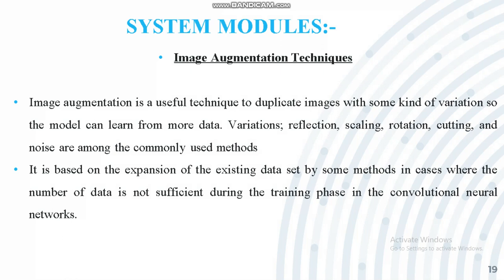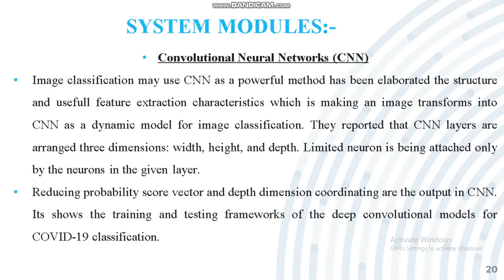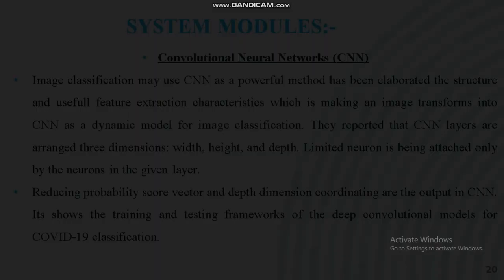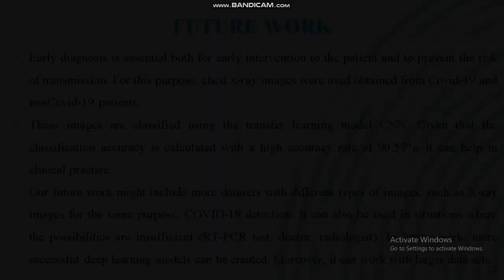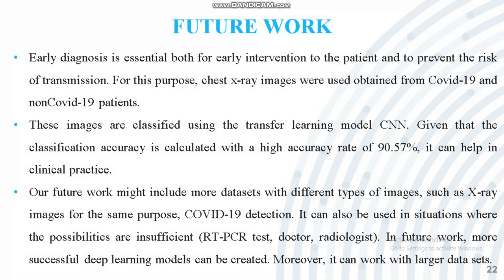In the convolutional neural network, CNN layers are arranged in three dimensions: height, width, and depth. The limited neuron is attached only by the neurons in the given layer, and the output gives a reduced probability score vector with depth dimension coordination. The training and testing frameworks of the deep convolutional models are used for the COVID-19 classification system. Repeated classification calculations are involved in chest CT image-based COVID-19 disease classification using the CNN model, which accurately classifies patients as infected by COVID-19 or not.